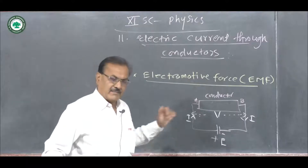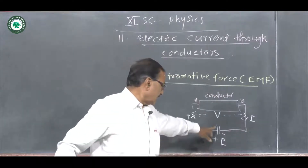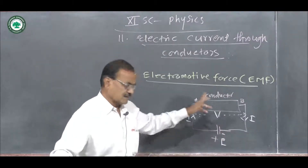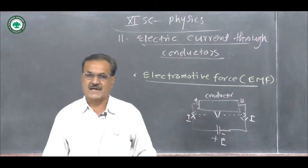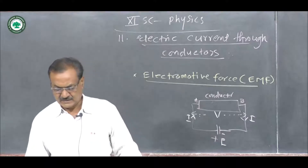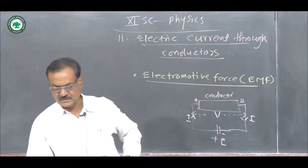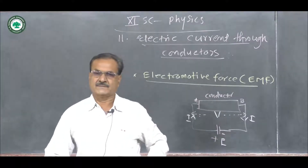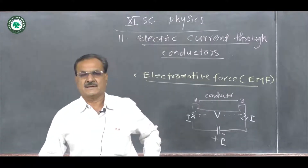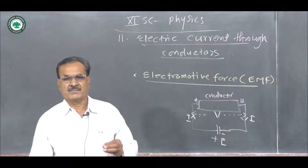EMF is nothing but the energy supplied by a cell to circulate a unit charge once round the complete circuit. This is called the electromotive force of the cell. Therefore, electromotive force is not a force, but it is the energy needed to send a unit charge through the complete circuit.